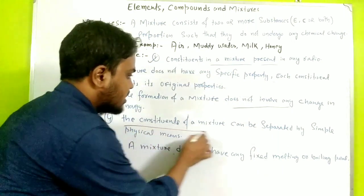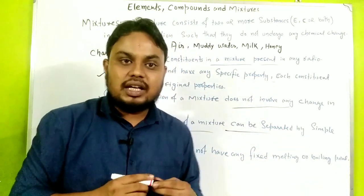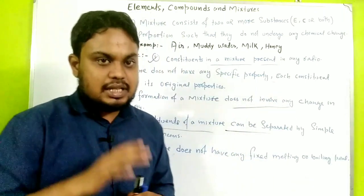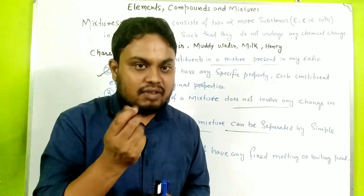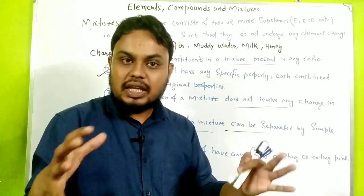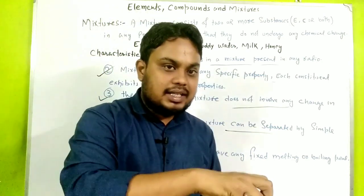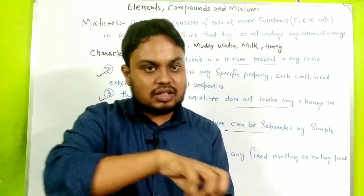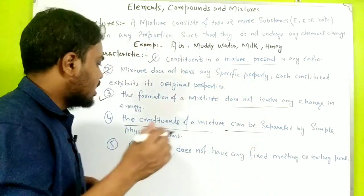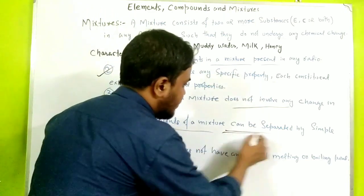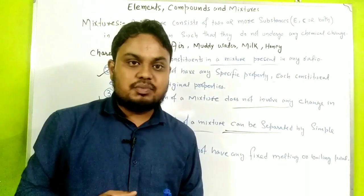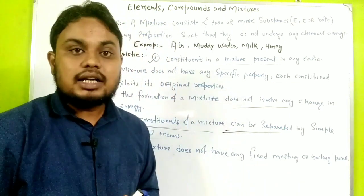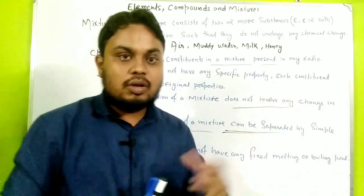The constituents of a mixture can be separated by simple physical means. For example, iron fine particles mixed with dust can be separated physically. Also, a mixture does not have any fixed melting point or boiling point, because the composition is not fixed.